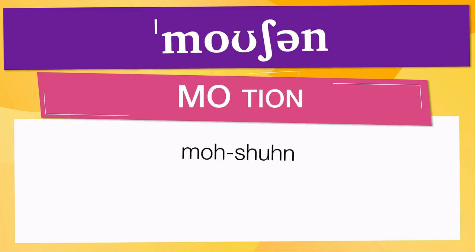Pay attention to the pronunciation. The first one is the word represented using the International Phonetic Alphabet. To pronounce 'motion,' have in mind that the size of the syllable indicates where the accent or stress is. In this case, the accent is in the first syllable, corresponding to 'mo.' Here are other ways to pronounce it.